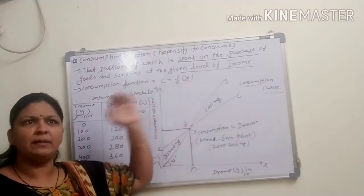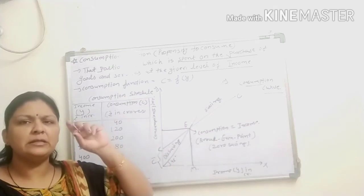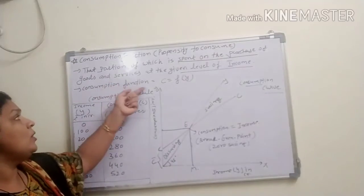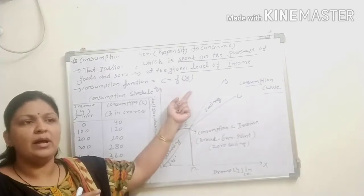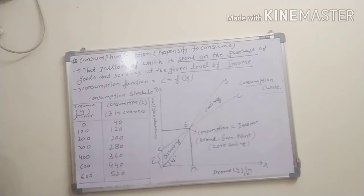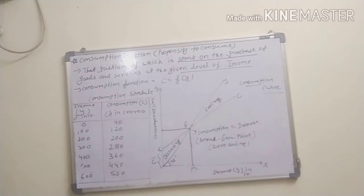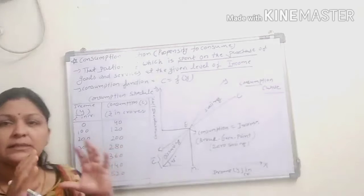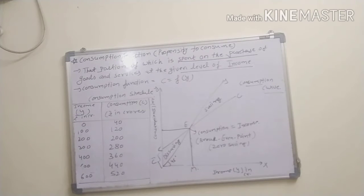The time period is one accounting period. Given level of income, according to the national income, the consumer plans his or her consumption level. It is also known as the consumption level at different levels of income in an economy. It is a psychological concept — we are just planning, and planning is made by the mind only. It is influenced by subjective factors like the consumer's preferences, habits, etc.